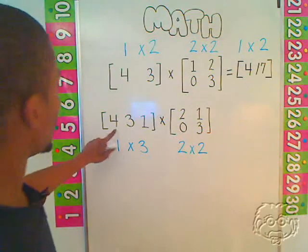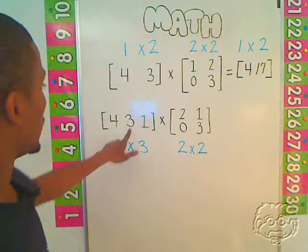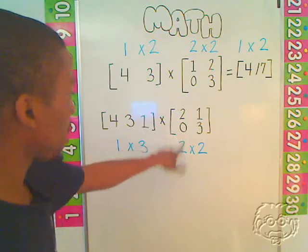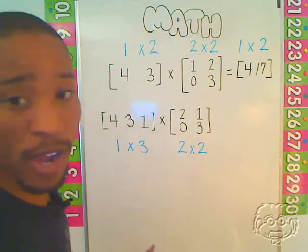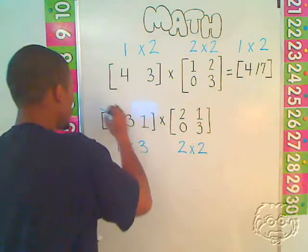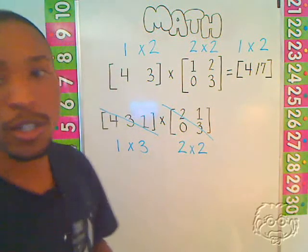For example, I've got 4 multiplied by 2. That's 8. 3 multiplied by 0. Well, that's 0. What's 1 going to be multiplied by? There's no value there. So we know that we shouldn't be able to perform multiplication in this situation.